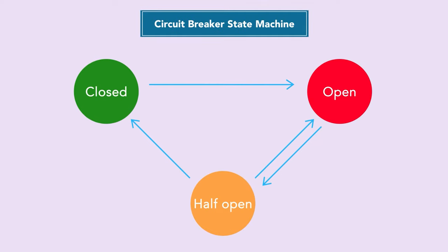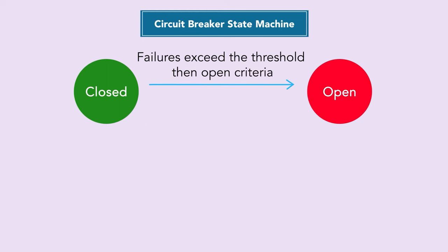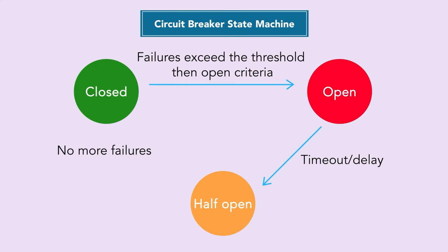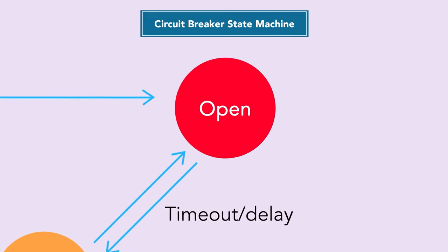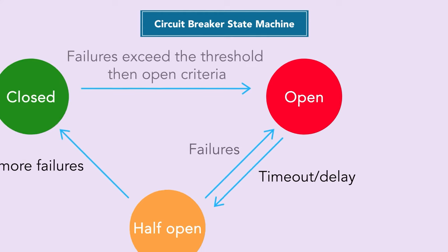Here is the circuit breaker state machine. The three states are closed, open, and half-open. The default state is closed. If failures exceed a threshold, the circuit breaker moves to open state, stopping all calls. From open state, a timeout triggers a switch to half-open state to test if the system has recovered. If it has, the circuit moves back to closed. If not, it returns to open state. This cycle repeats until recovery is confirmed.